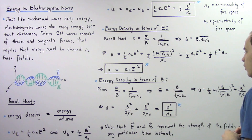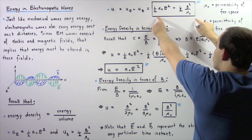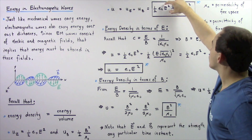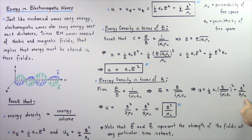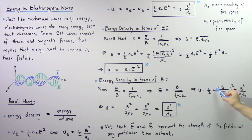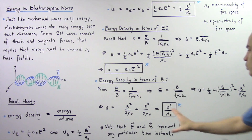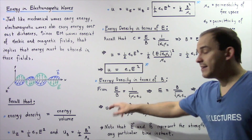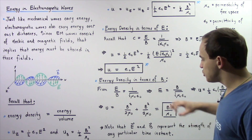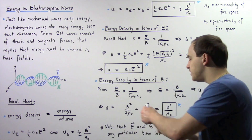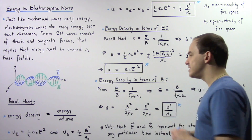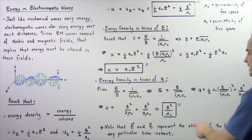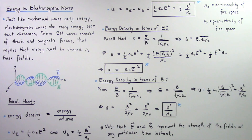We substitute the expression for the electric field E in terms of B into the energy density equation. Squaring that quantity gives B squared divided by mu naught times epsilon naught, and with epsilon naught canceling from numerator and denominator, we get the result that the energy density of our electromagnetic wave equals B squared divided by mu naught, the permeability of free space.